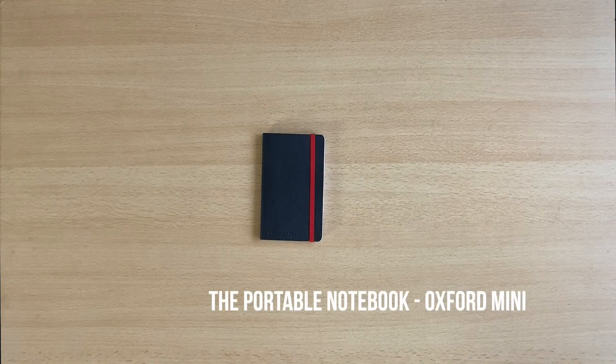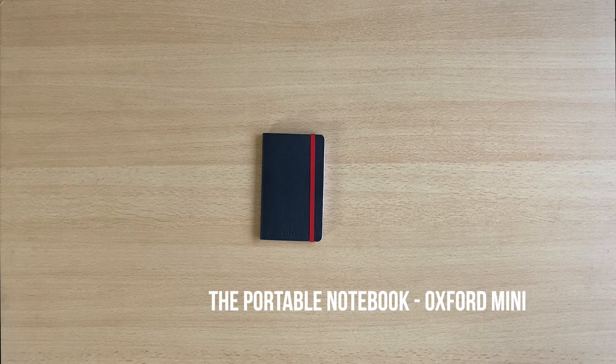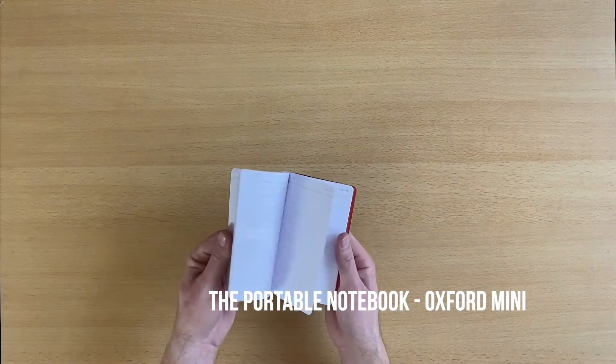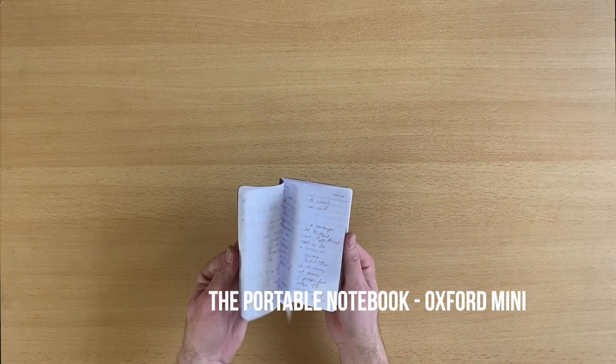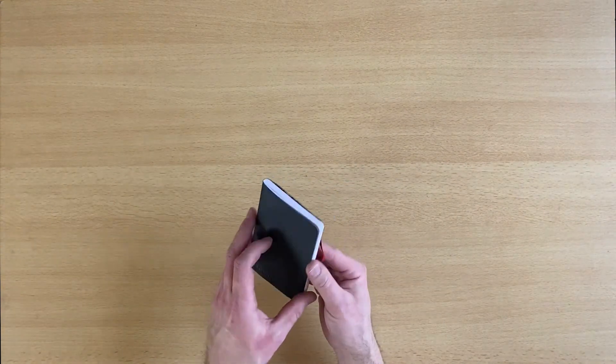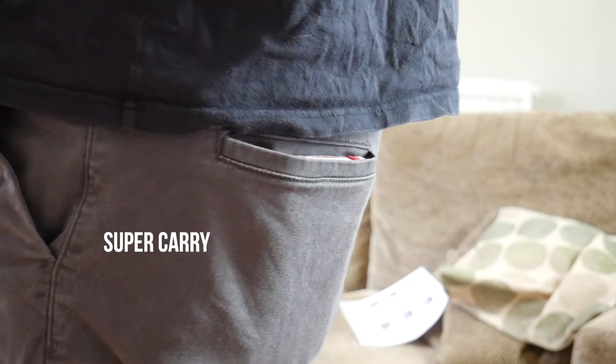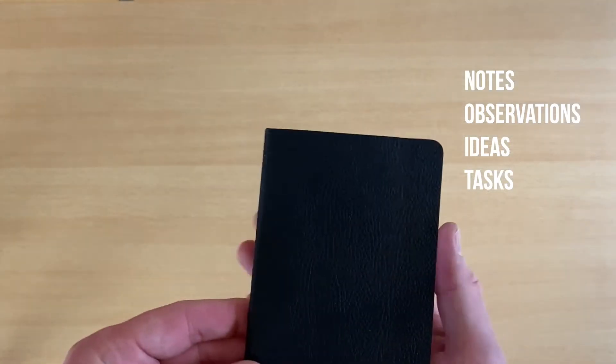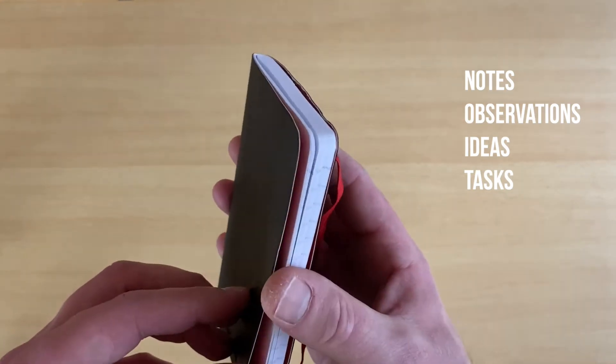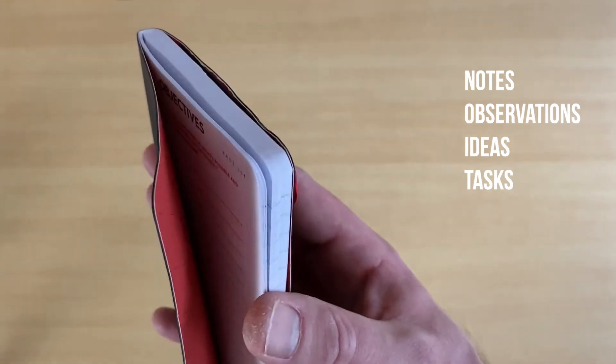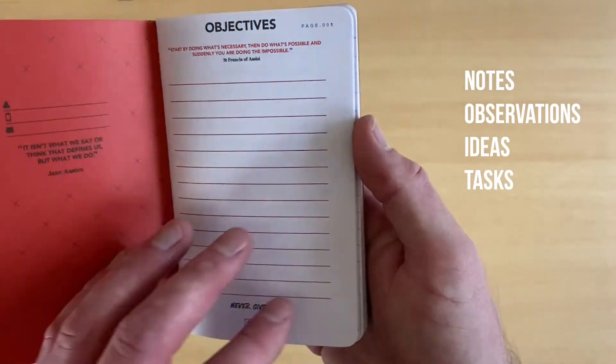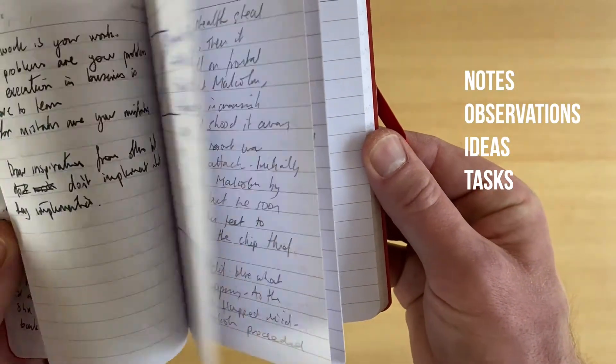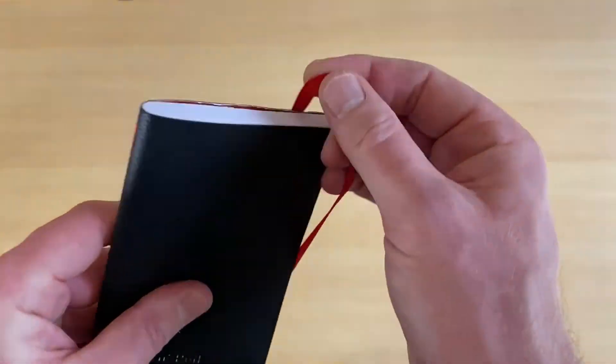My portable everyday notebook is this little Oxford Mini. Wonderful little thing with really nice paper texture. Paired with the Energel, it's really quite good. The reason I like it is it's super carryable - I can slip this in my pocket. I use it for notes, observations, ideas, and tasks. Just things I see as I walk around, as I interact, as I go about my day. I can just whip this out, make a few notes, and move those into whatever system I've got later on.